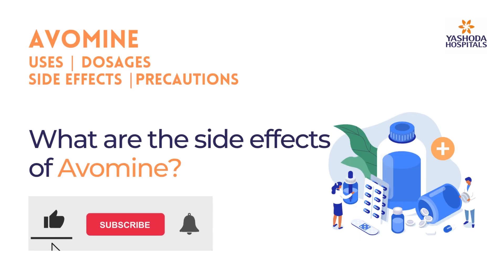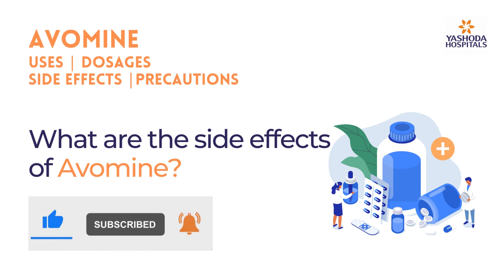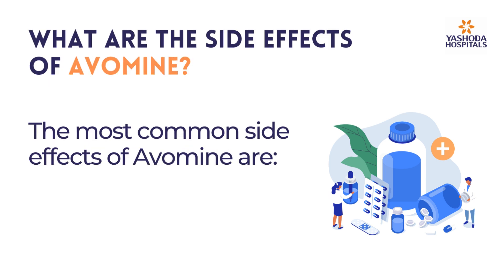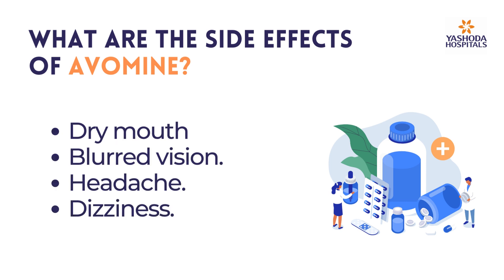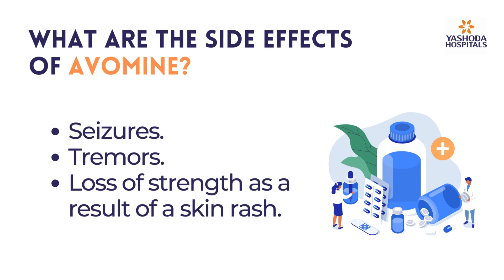What are the side effects of Oramine? The most common side effects of Oramine are dry mouth, blurred vision, headache, dizziness, seizures, tremors, and loss of strength.